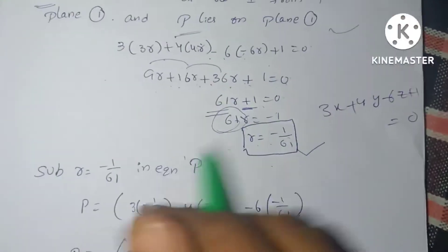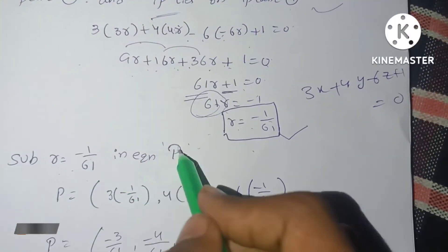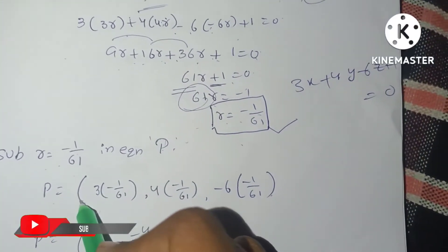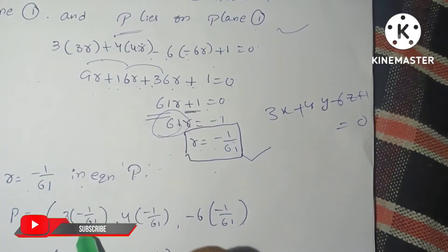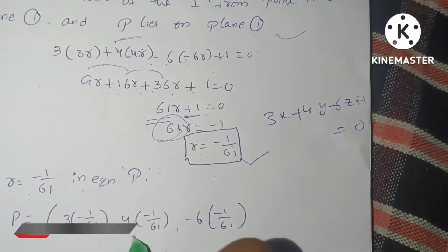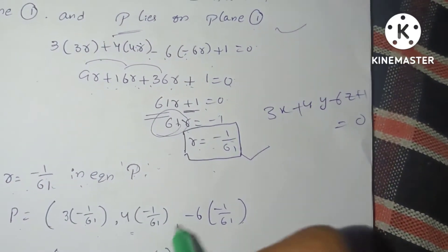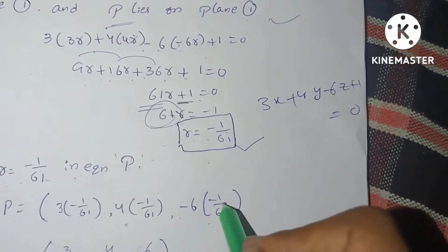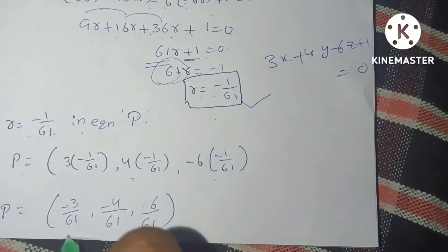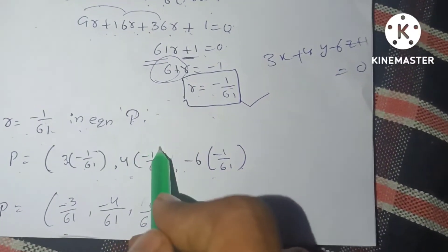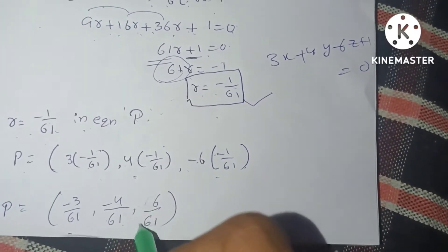Substituting R = -1/61 back into point P: 3R = 3 × (-1/61) = -3/61; 4R = 4 × (-1/61) = -4/61; and -6R = -6 × (-1/61) = +6/61. So the foot of the perpendicular P = (-3/61, -4/61, 6/61).